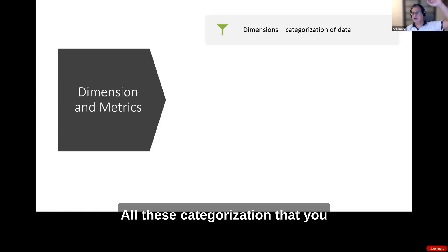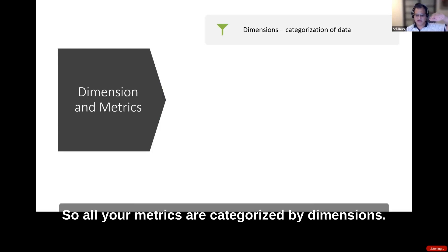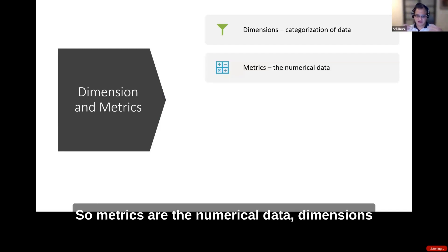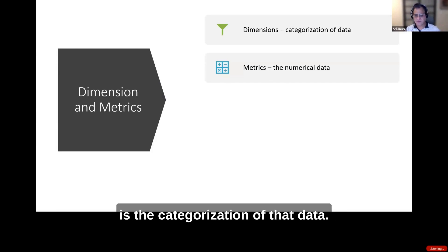All the categorization you see within Google Analytics - all your metrics are categorized by dimensions. Page name is a dimension. How many page views that page got is a metric. Metrics are the numerical data; dimensions are the categorization of that data.